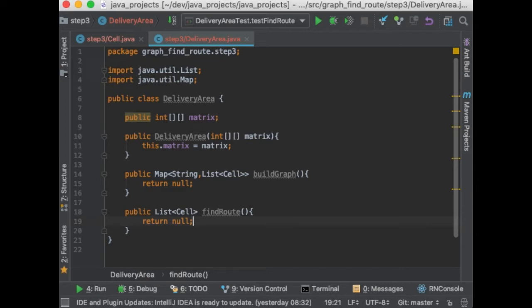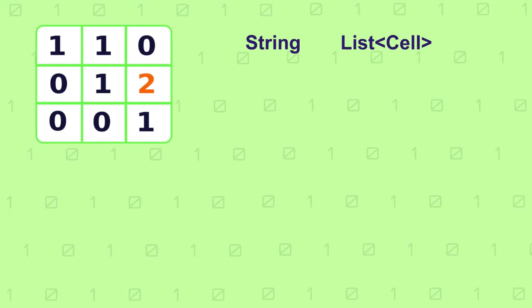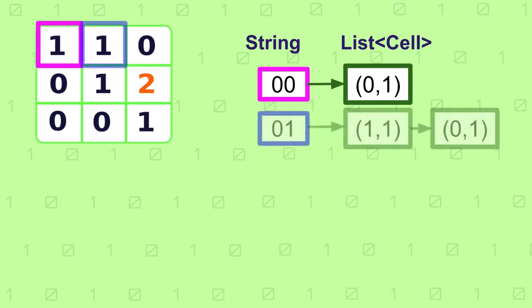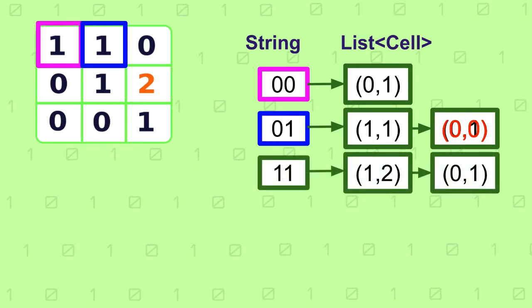So we have seen how the code is going to be organized. Let's start by seeing how we can convert the matrix into a graph data structure. Our graph will be a map using string type as the key and a list of cells as the value. In this example, cell 0,0 is connected to cell 0,1, so that means the cell has only one adjacent node which is 0,1. Cell 0,1 has two connected adjacent nodes: 0,0 and it's also connected to 1,1, and so on for the other nodes.